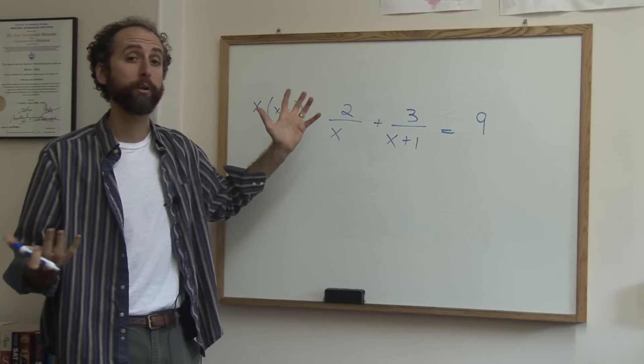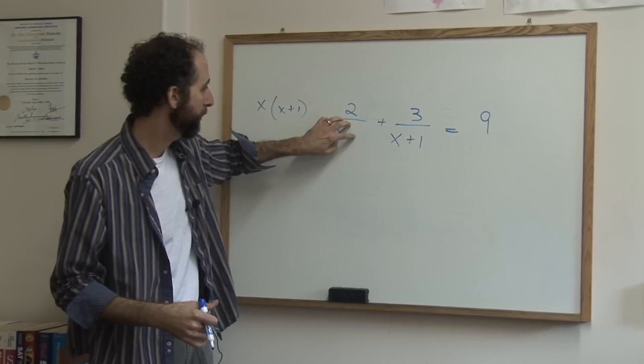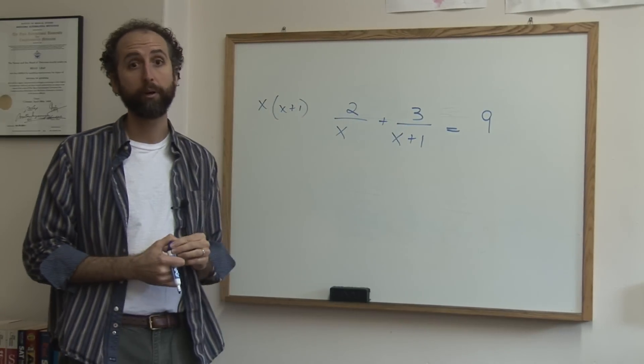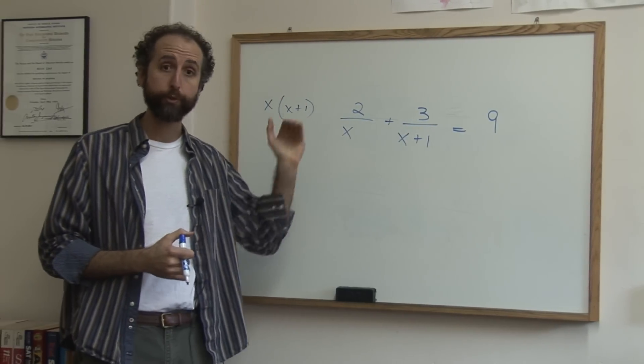Remember, if you're ever stuck on a common denominator, just multiply the two denominators and that's your common denominator. It may not be the lowest one, but you can always reduce later if you have to.